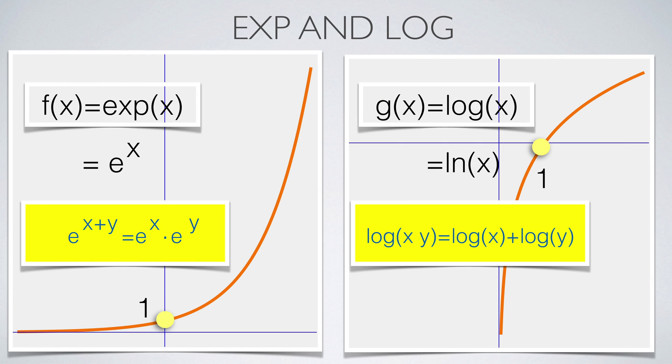The exponential function is an important example of a continuous function. It takes the value one at x equals zero and increases monotonically everywhere. Its inverse, the natural log function, is only defined for positive x. The exponential of a sum is the product of the exponentials. The logarithm of a product is the sum of the logarithms.